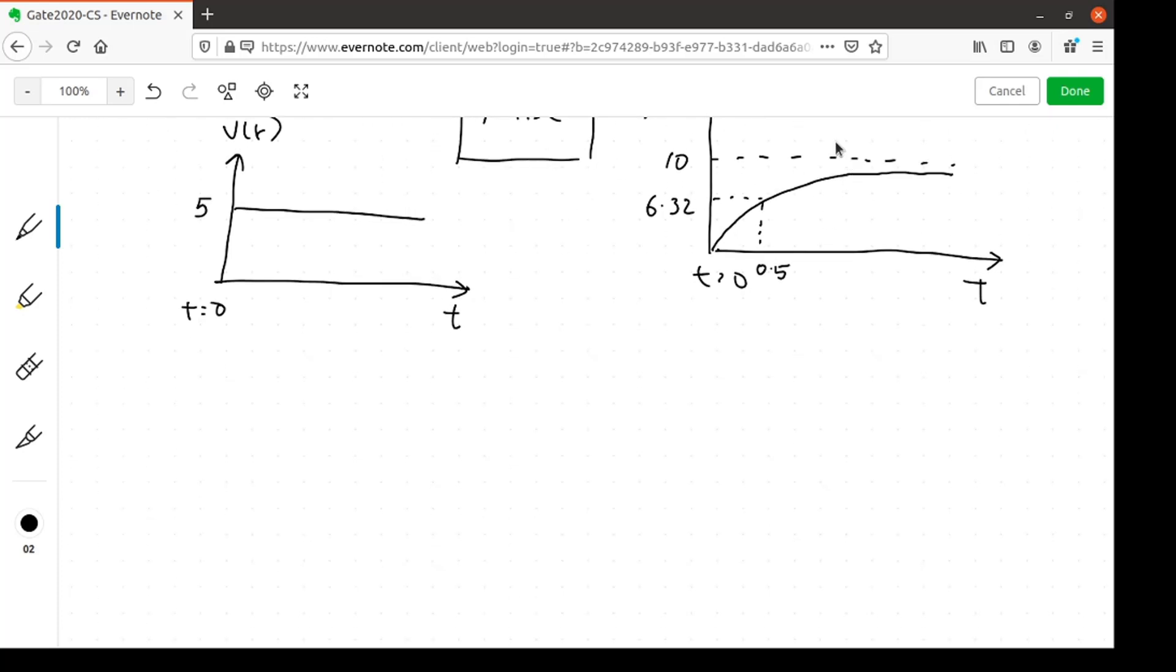Since this is a monotonically increasing output, we can represent the system, let's say g of s equal to omega of s by v of s, as a first order system. The general form of a first order system is k by 1 plus st, where k is the DC gain and t is the time constant. If we find both these values, we can find the transfer function of the system.